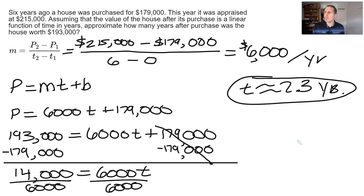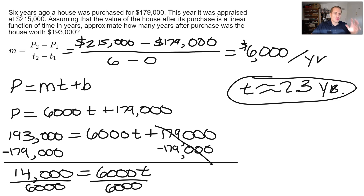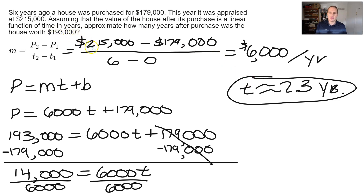We need to select the best answer from choices 1 through 5. Since t ≈ 2.3 years, the closest answer is 2. Approximately two years after purchase, the house was worth $193,000. I select 2 as the right answer and move on.